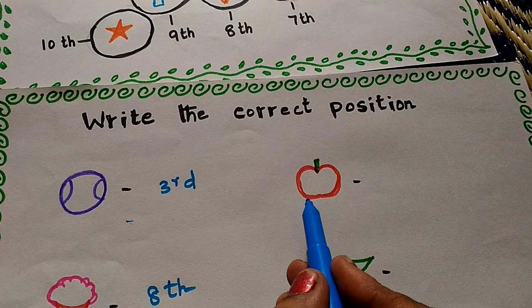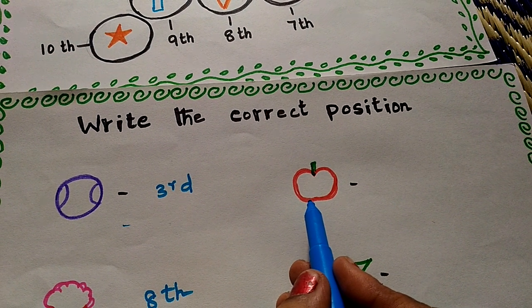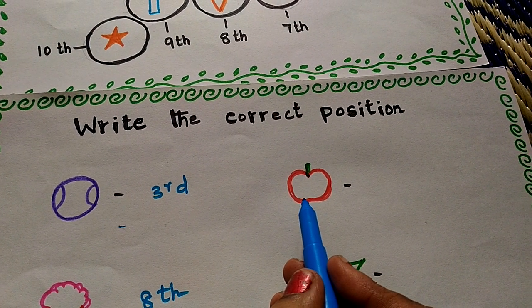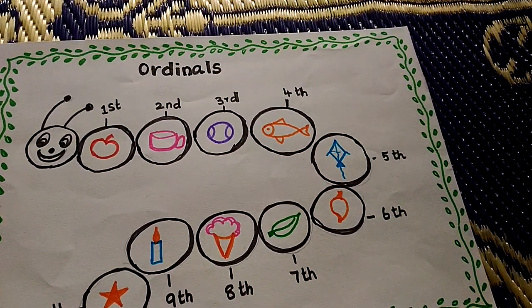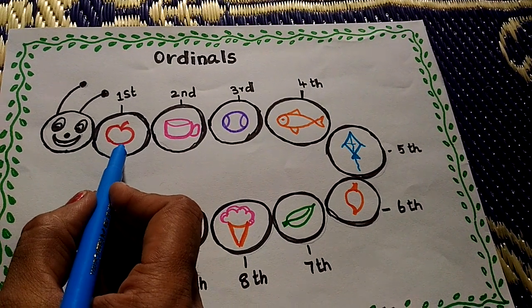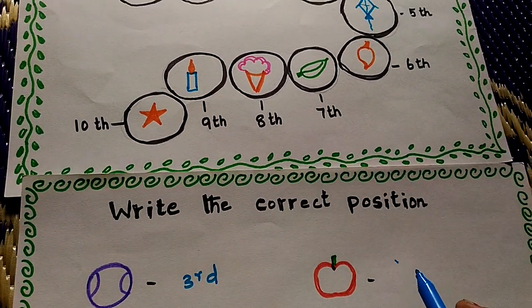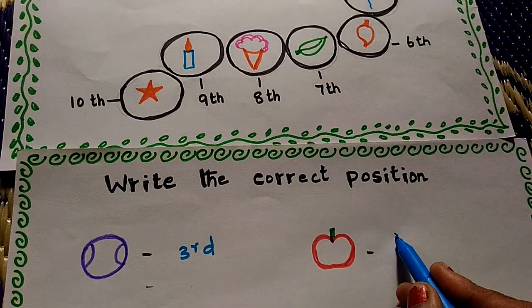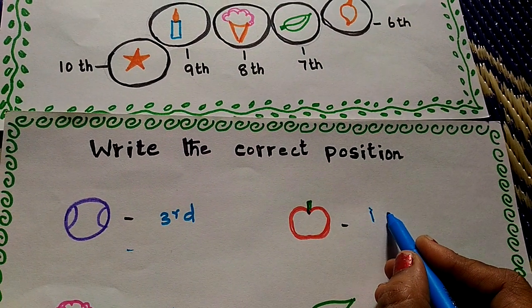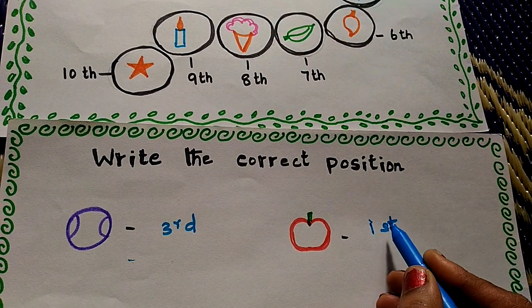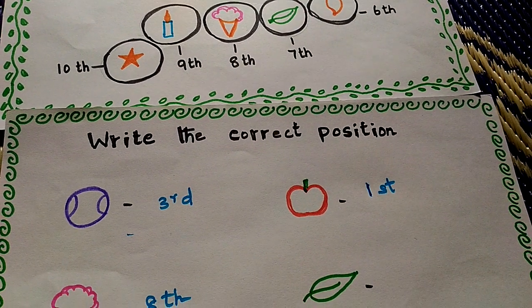Next. What is this? Apple. Which position can we find the apple? Where is apple? First. First one is apple. First position.